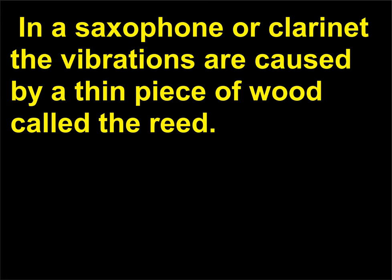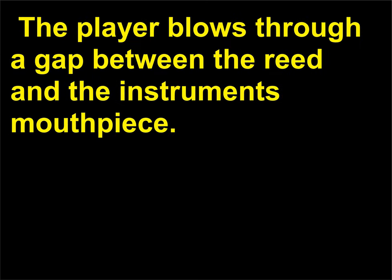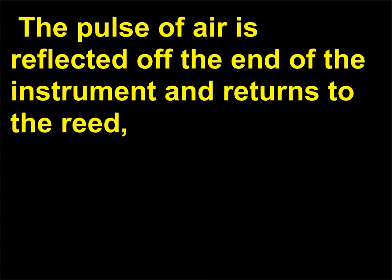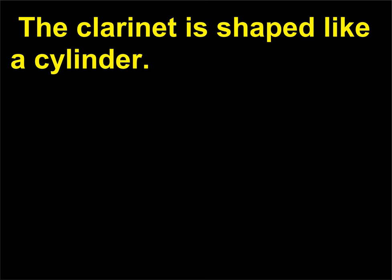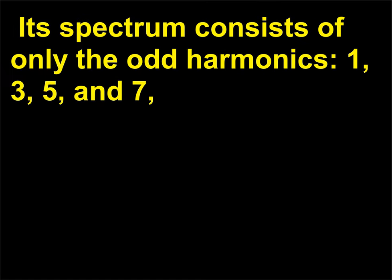In a saxophone or clarinet the vibrations are caused by a thin piece of wood called the reed. The player blows through a gap between the reed and the instrument's mouthpiece. The pulse of air is reflected off the end of the instrument and returns to the reed, pushing it open to admit another pulse of air. Double reed instruments like the oboe and bassoon work in the same way. The clarinet is shaped like a cylinder. Its spectrum consists of only the odd harmonics: 1, 3, 5 and 7, etc.